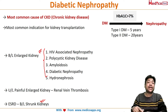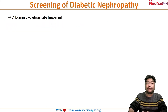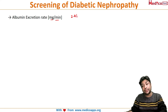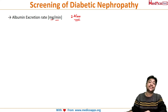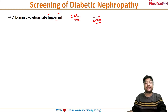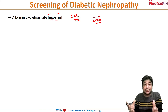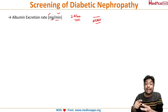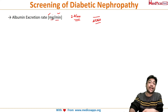To diagnose diabetic nephropathy, one of the most important tests is the albumin excretion ratio, measured in milligram per minute. We collect 24 hours of urine, measure the total albumin excreted, and divide it by 24 into 60 to get the albumin excretion rate in milligram per minute. This is a very good screening test for diabetic nephropathy.